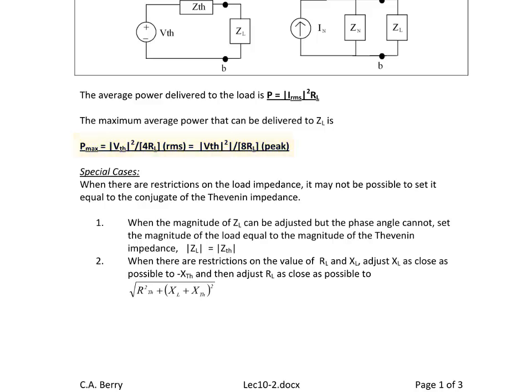There are special cases where restrictions on the load impedance make it impossible to set it exactly equal to the conjugate of the Thevenin impedance. Special case one: when the magnitude of Z_L can be adjusted but the phase angle cannot, set the magnitude of the load equal to the magnitude of the Thevenin impedance. Special case two: when there are restrictions on R_L and X_L, adjust X_L as close as possible to negative X_Thevenin, then adjust R_L as close as possible to the magnitude of R_Thevenin squared plus (X_L plus X_Thevenin) squared.